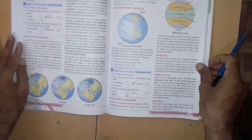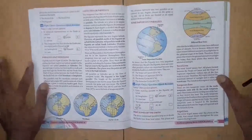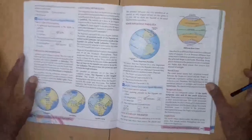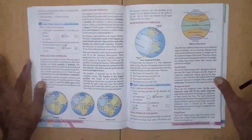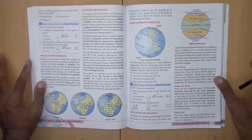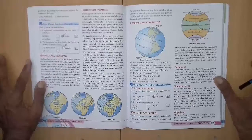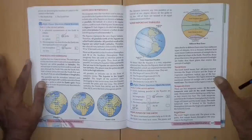Now page number 117. Tick the correct options. 1. Lines running parallel to the equator are called A longitudes, B latitudes, C timeline. Right answer is B latitudes.